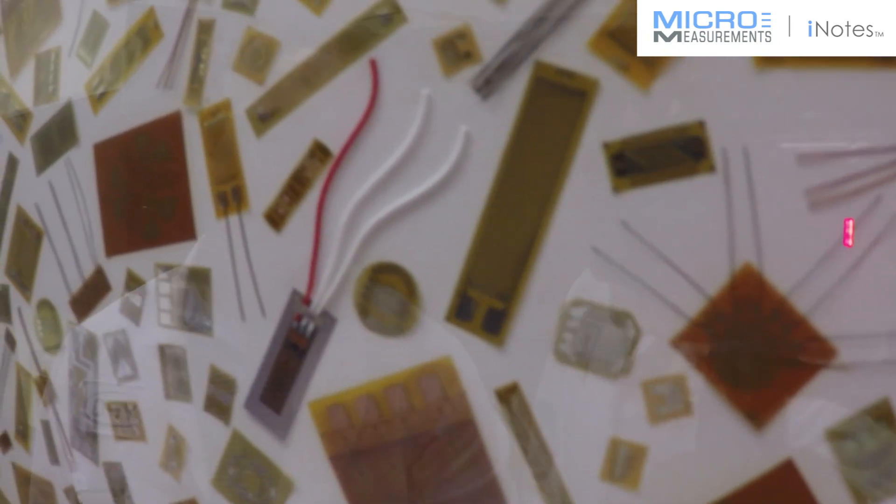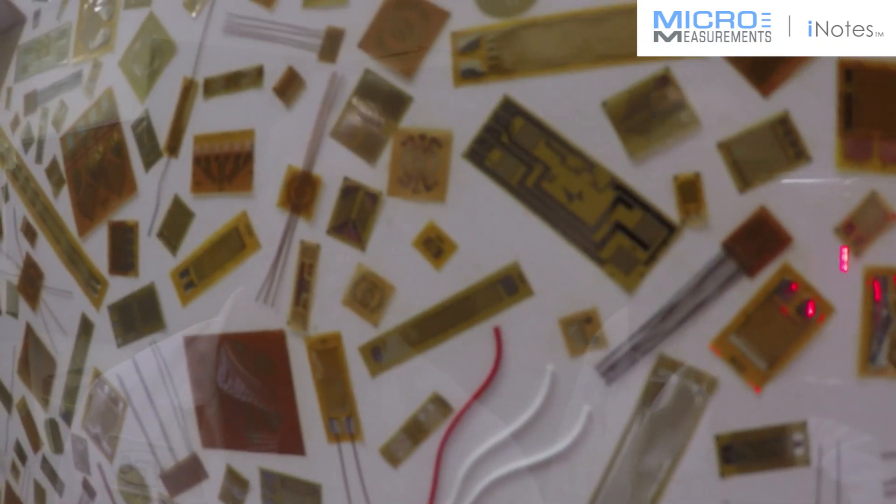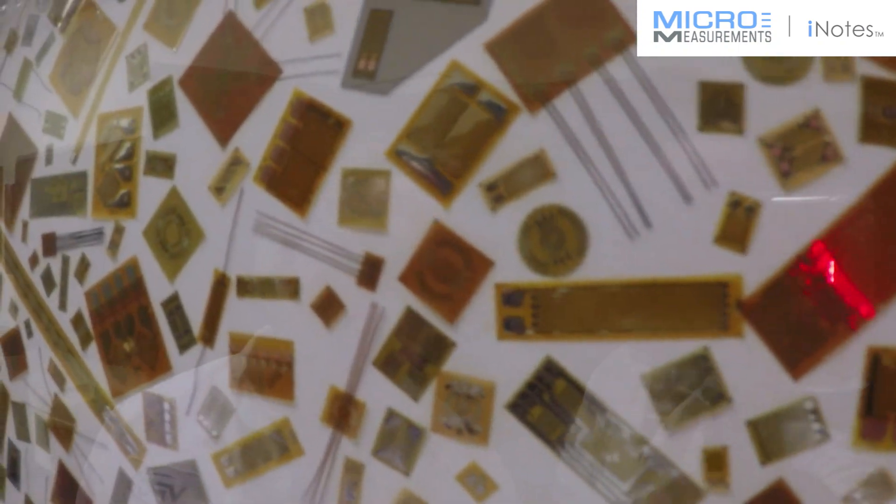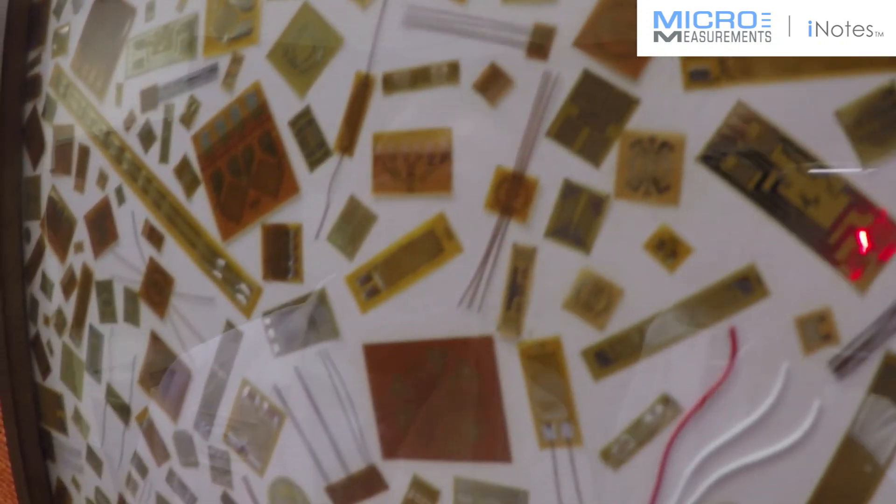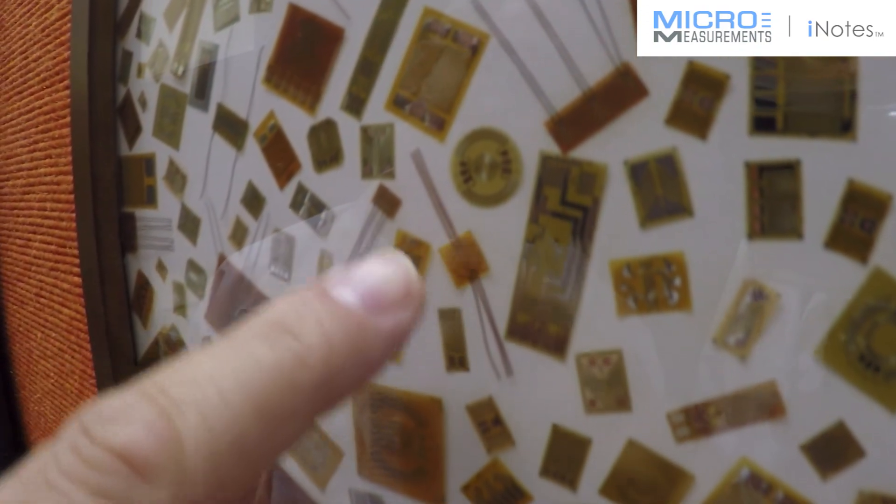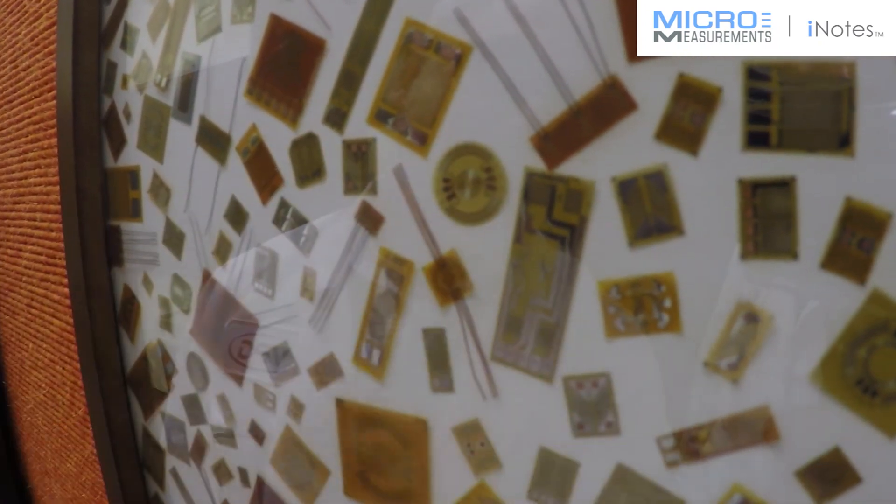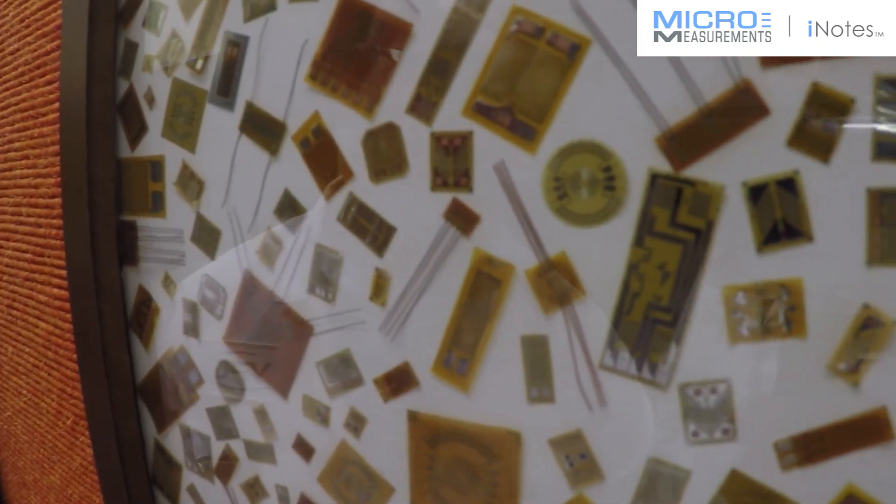So oftentimes we'll take the basic gauge and then we'll add on some whisker leads so that really all the soldering they have to do is back over at a terminal as opposed to maybe some very small tabs on the gauge. If you look down here at this very small circular diaphragm gauge, you'll see what I mean. This one is a little small pattern, very small fine connections, and putting those leads on it really makes that a whole lot easier.